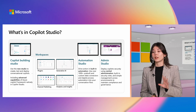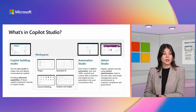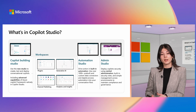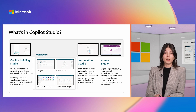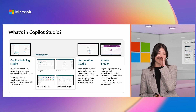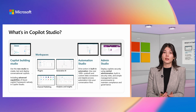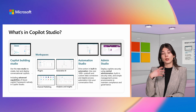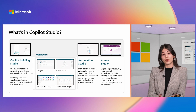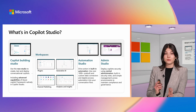Inside Copilot Studio you have a building studio where you work on all capabilities — workspaces for enabling generative AI, connecting to plugins, and publishing to different channels. You also get analytics and insights on how your bot is performing and answering questions. Automation Studio is part of the added functionality, allowing you to create Power Automate automations that connect to your copilot and run workflows triggered during conversation. The admin studio handles central administration, compliance, and governance.